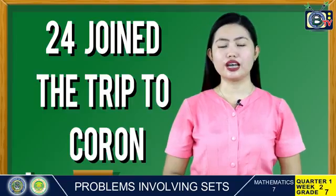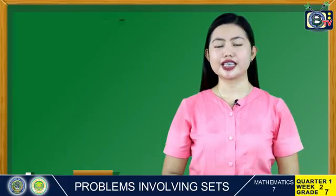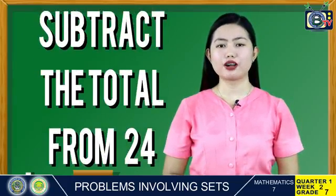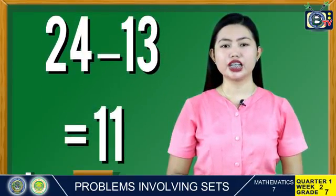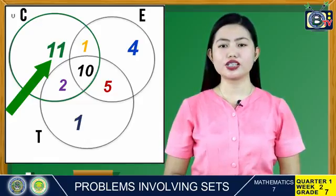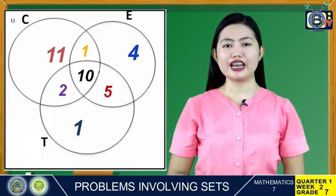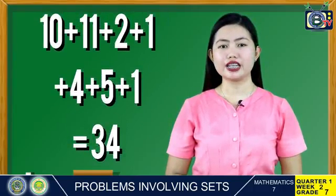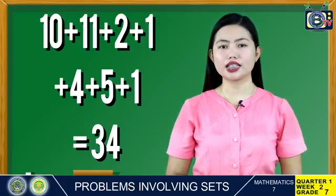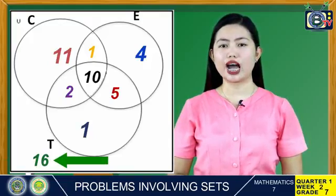24 joined the trip to Coron. Add all the given elements of set C — elements in the green circle — that is 10 plus 1 plus 2 equals 13. Subtract the total from 24: 24 minus 13 equals 11. Put 11 in set C only. This completes the 24 students. Now for the total: 50 students went on the tour. Add all the given elements: 10 plus 11 plus 2 plus 1 plus 4 plus 5 plus 1 equals 34. Subtract 34 from 50: 50 minus 34 equals 16. Put 16 inside U but outside the three circles.